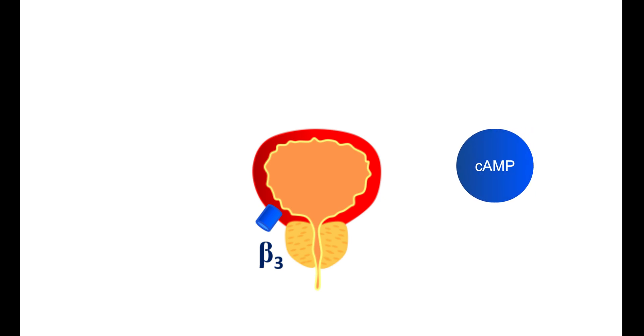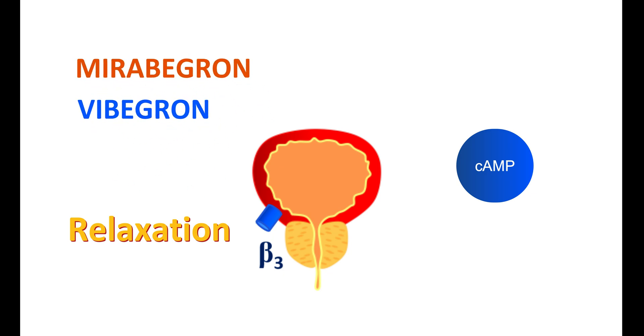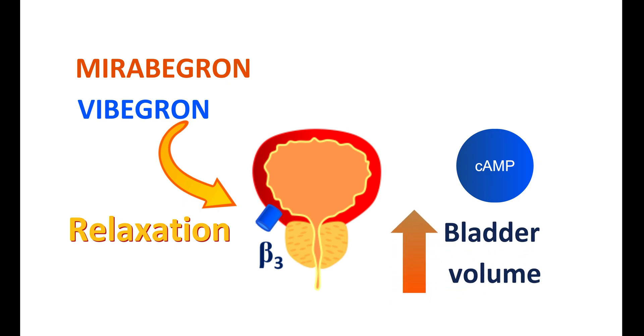Beta-3 adrenergic receptors are located on the bladder neck. When activated, they increase cyclic AMP (cAMP) levels in the muscle, which brings relaxation. Both mirabegron and vibegron can activate these receptors, resulting in bladder relaxation. This increases bladder volume, which improves urinary holding capacity.